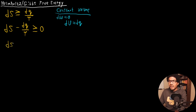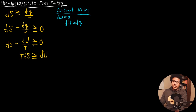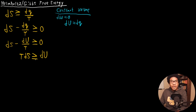If that's the case, we can add DU into the Clausius inequality statement. So we have DS minus DU over T is greater than or equal to zero. Rearranging — putting DU on the other side and multiplying both sides by T — we get the following inequality: DU ≤ TdS.